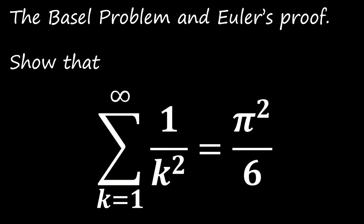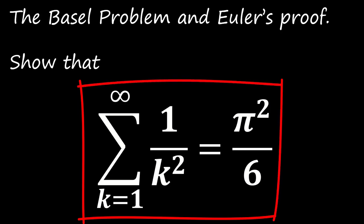For today, we are going to discuss the Basel problem and Euler's proof. We want to show that the summation of 1 over k squared from k equals 1 to infinity equals pi squared over 6. You may have a good try before you look at the answer.